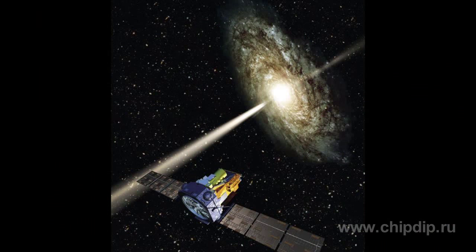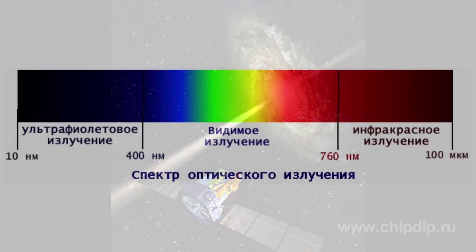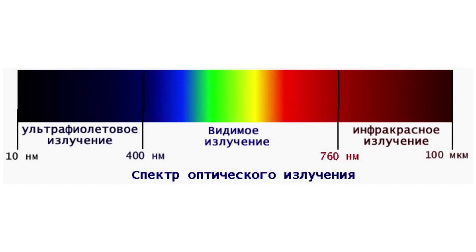Water vapors, whose absorption bands lie within almost the whole infrared spectrum domain, are the most intensive infrared radiation absorbers, while carbon dioxide intensely absorbs radiation within the intermediate infrared region.